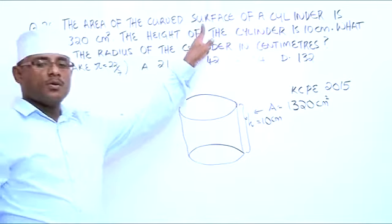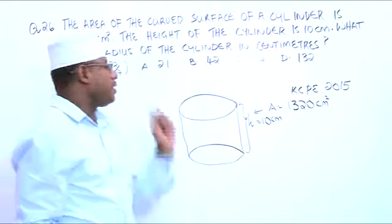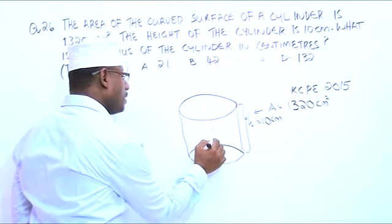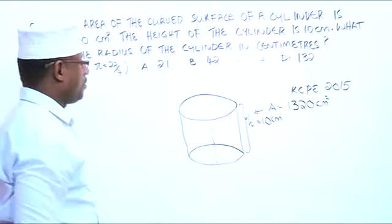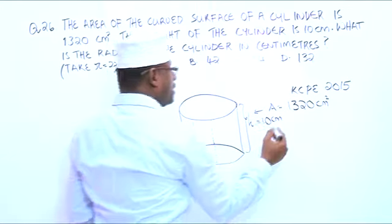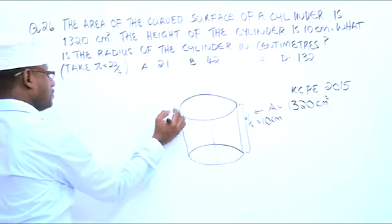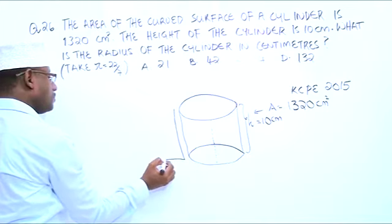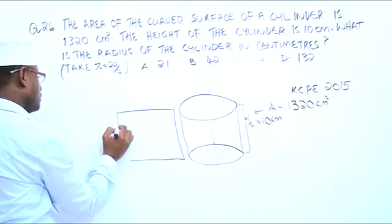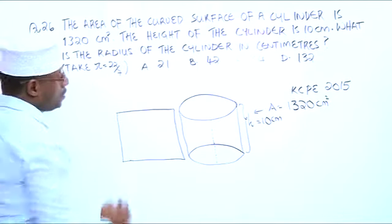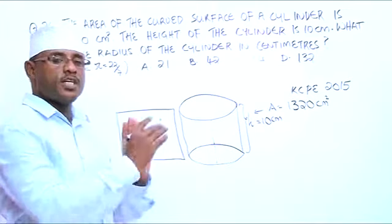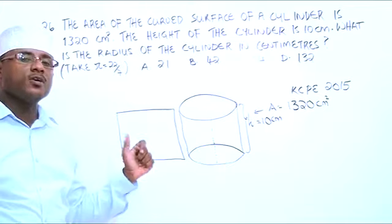The curved surface is our cylinder. If we cut the cylinder here and open it up or stretch it, it is going to give us something like a rectangle.